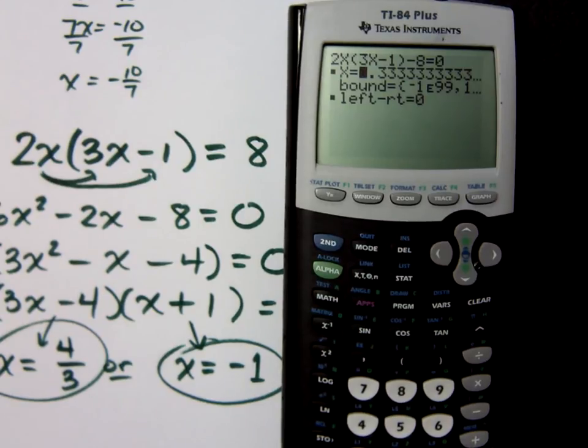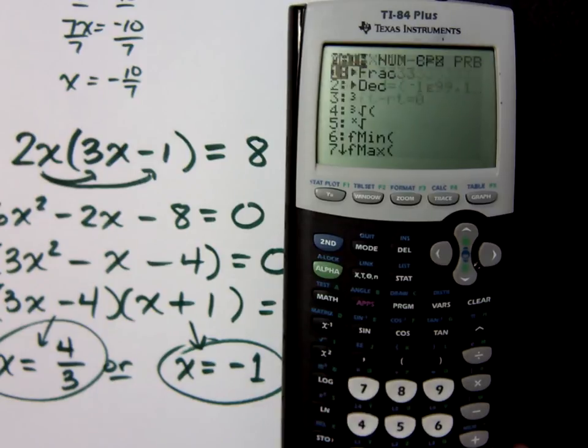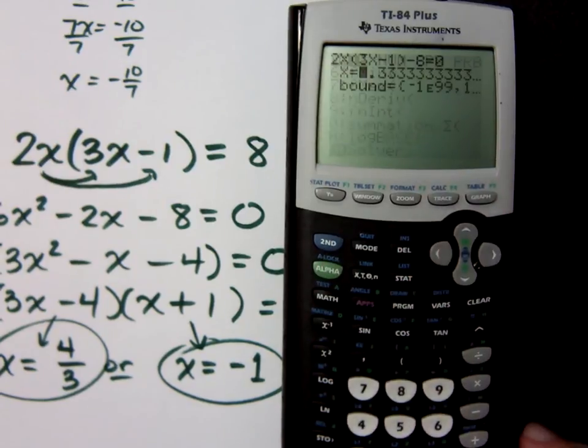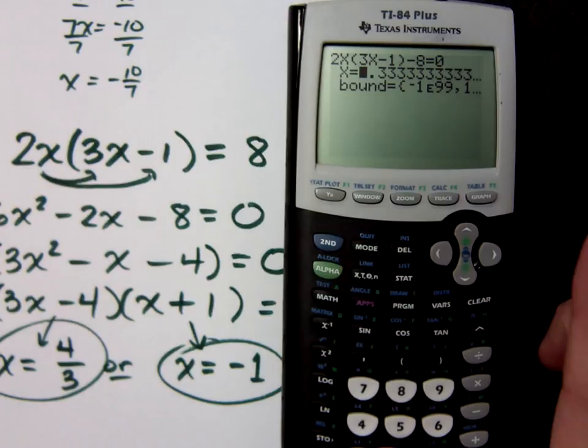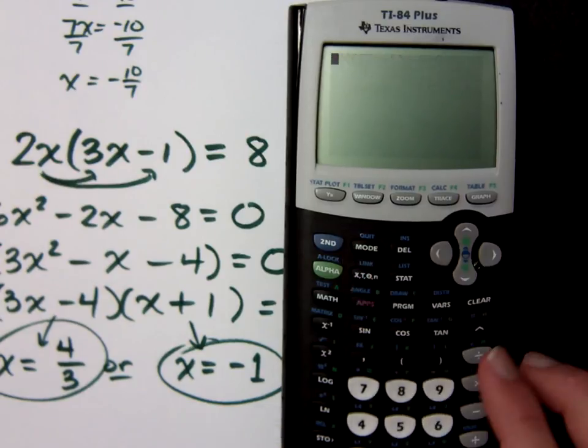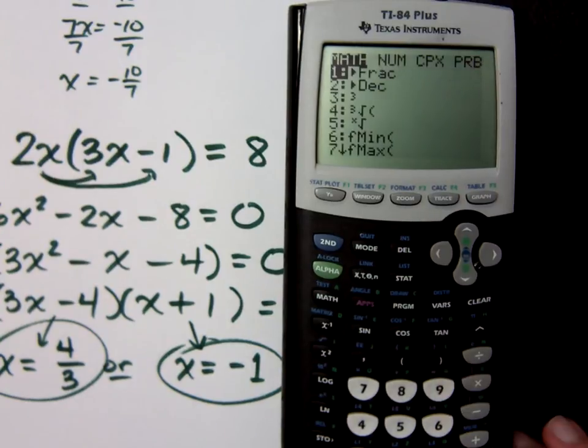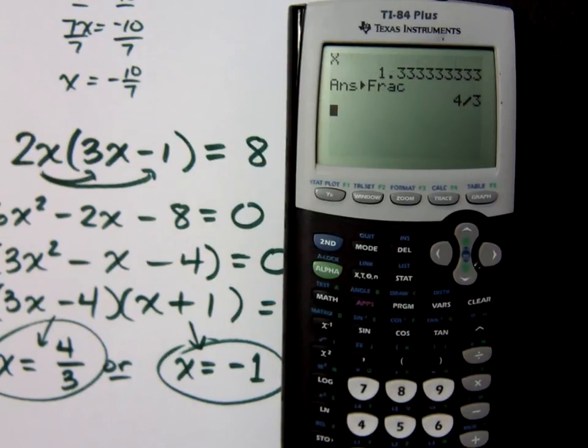Hopefully you can convert 1.3 repeating to a fraction, but if you can't, what am I going to do? I can't do that from here though, because if I do this, it didn't like that. It has that for my x, right? So quit, type in x here, and it has it as 1.3 repeating. So now you can convert that to math, math frac, fraction, 4 thirds.